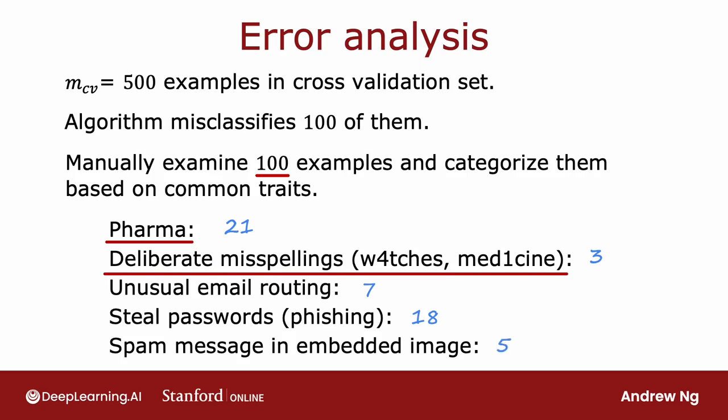If you end up with these counts, they tell you that pharmaceutical spam and phishing emails seem to be huge problems, whereas deliberate misspellings, while a problem, is a smaller one. In particular, this analysis tells you that even if you built really sophisticated algorithms to find deliberate misspellings, it would only solve 3 out of 100 misclassified examples, so the net impact seems like it may not be that large.